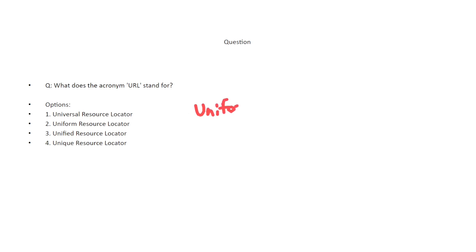What does the acronym URL stand for? The options are: universal resource locator, uniform resource locator, unified resource locator, and unique resource locator. I'll write down the answer — if you know it, please write it in the comment before checking. The correct answer is uniform resource locator.